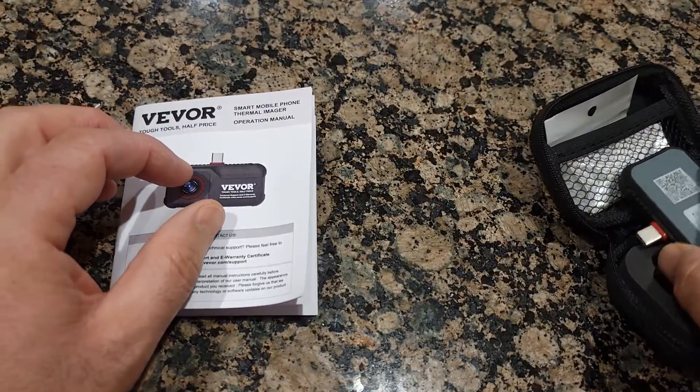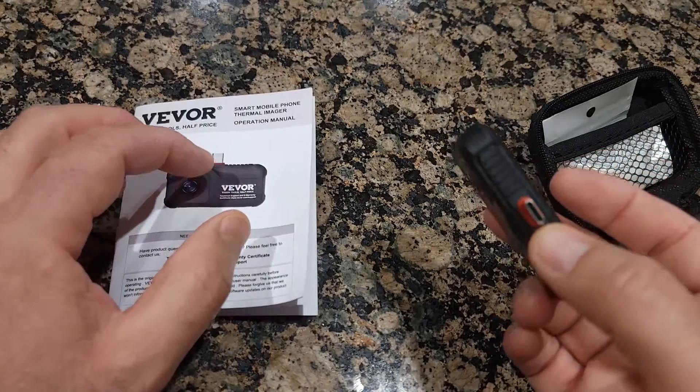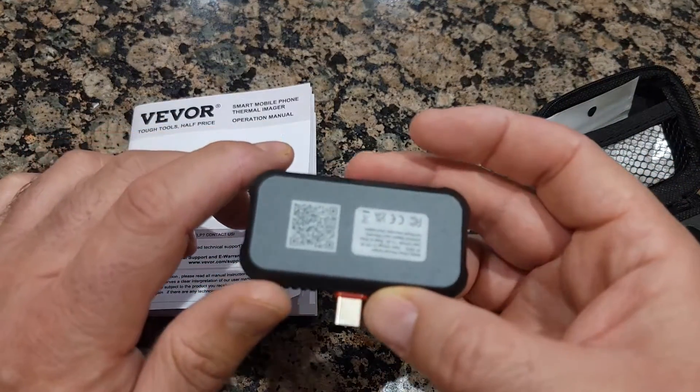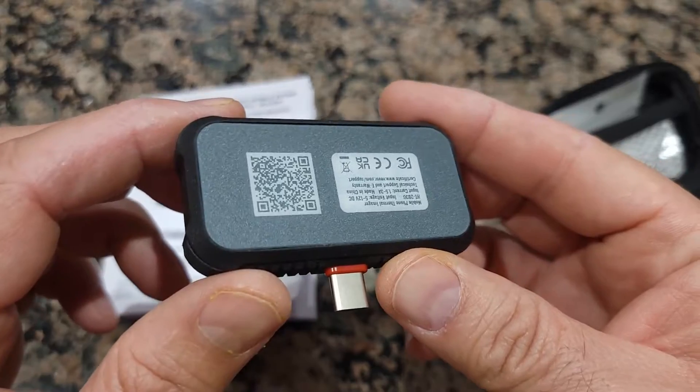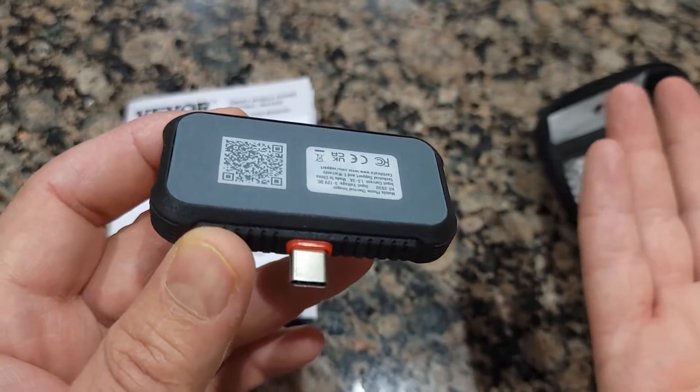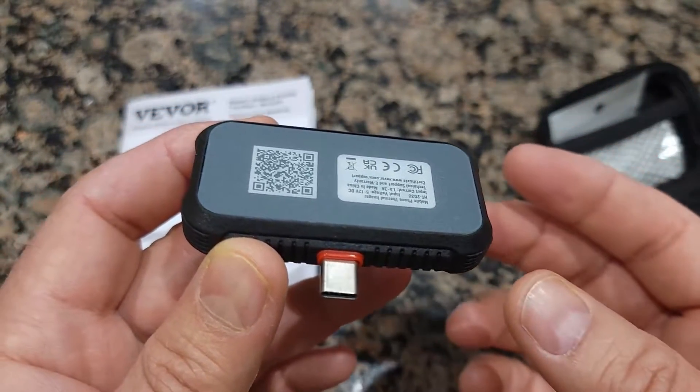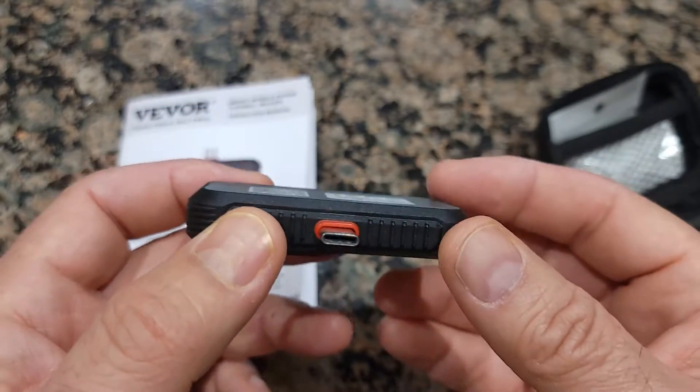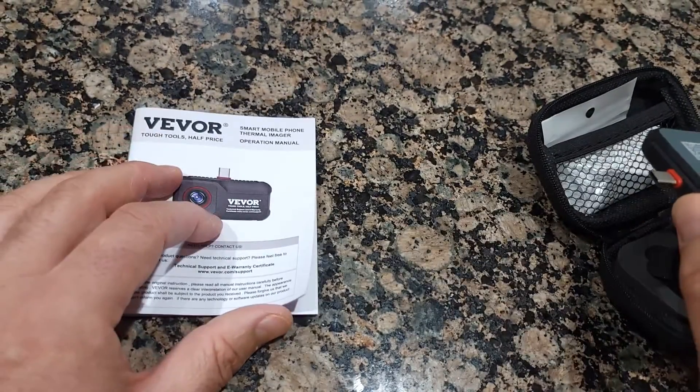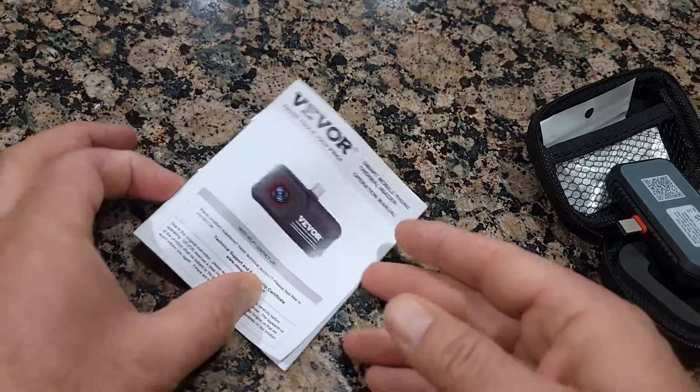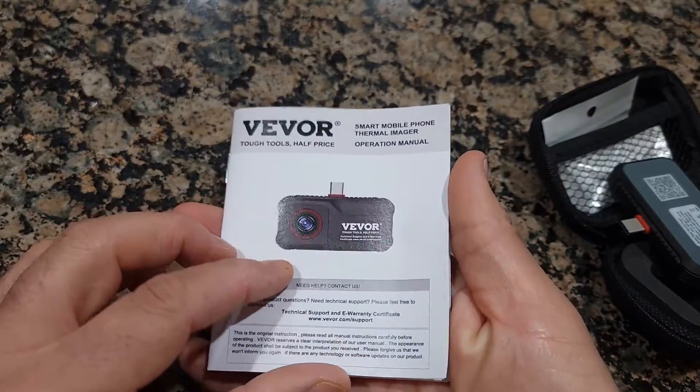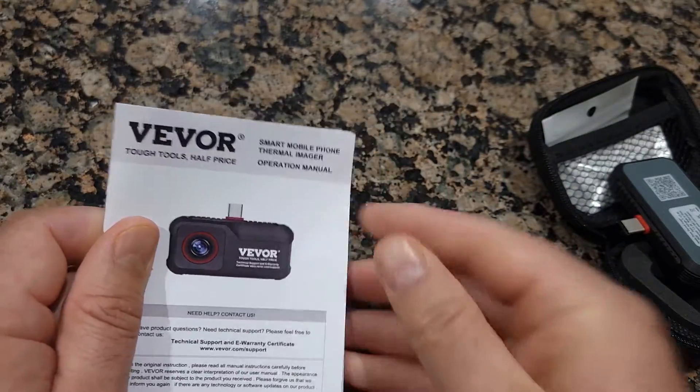Once you scan, it will allow you to download the app, which you have to install in order to use this. It takes about 20 to 30 seconds to download, and then you'll be able to see thermal imaging. I'll show you how it actually works. It's a very small device.